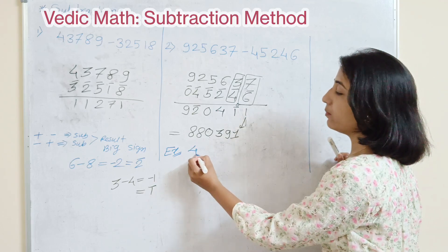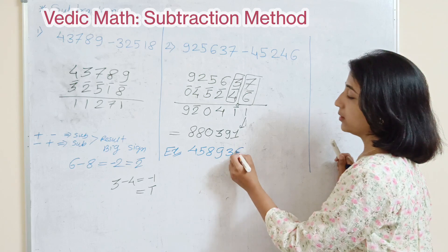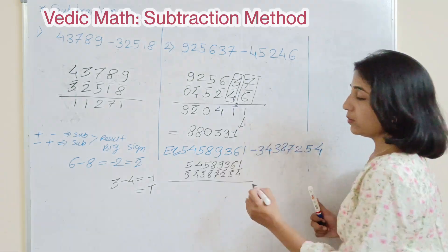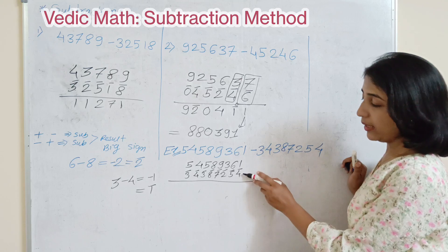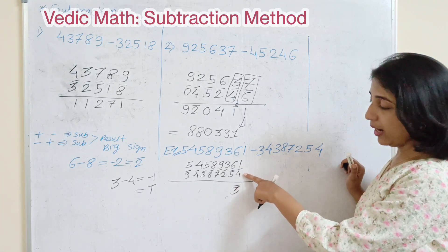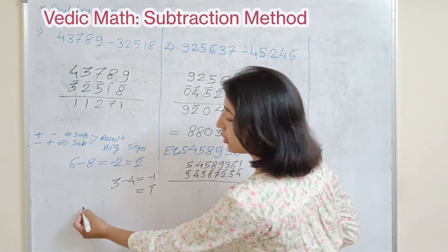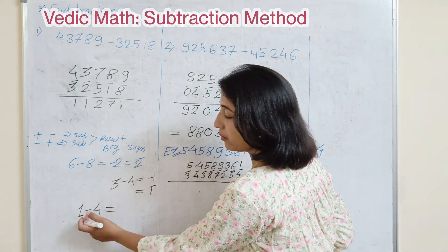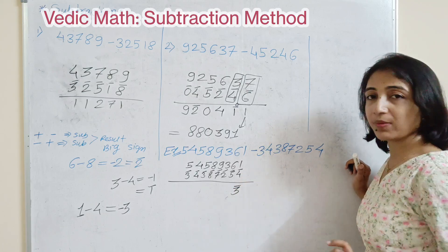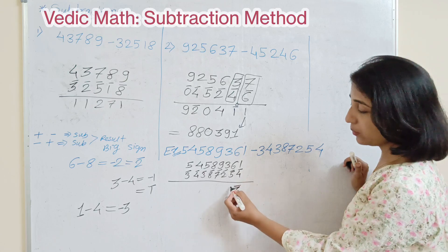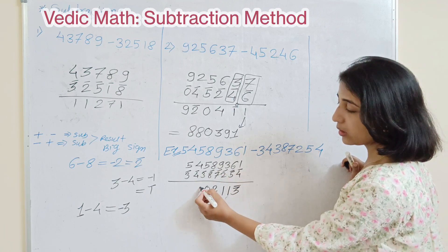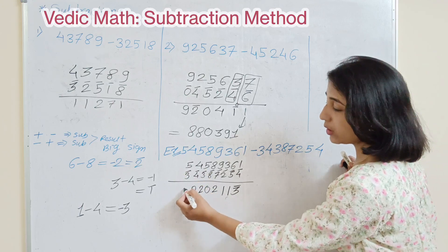Let's take one more example. The number is 4589361, and we are subtracting a randomly chosen number. Again do the digit-wise subtraction. 1 minus 4: taking big number minus small number gives 3, and since 4 is the bigger and negative number, write 3-bar. Next: 6 minus 5 is 1, 3 minus 2 is 1, 9 minus 7 is 2, 8 minus 8 is 0, 5 minus 3 is 2, 4 minus 4 is 0.